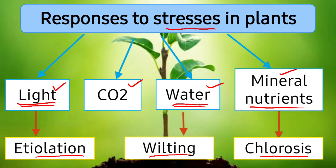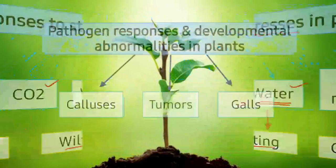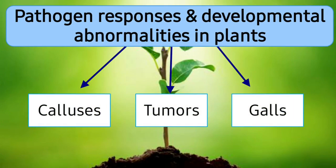So these are a few stress conditions that plants have to face, respond to, and evolve according to each condition. Next we talk about pathogen responses and developmental abnormalities in plants. Pathogens are any external attackers or invaders which, after coming in contact with plants, can cause different problems — upsetting the plant and causing developmental abnormalities to appear.